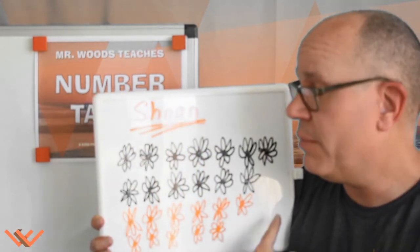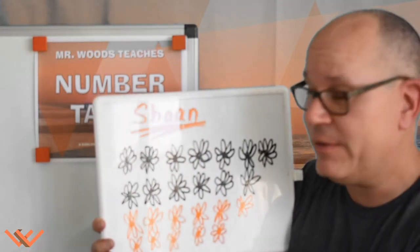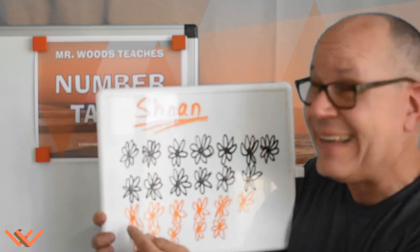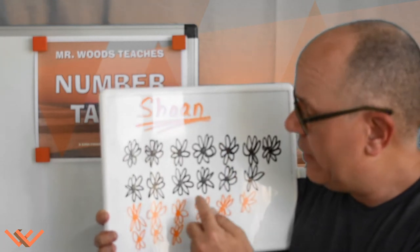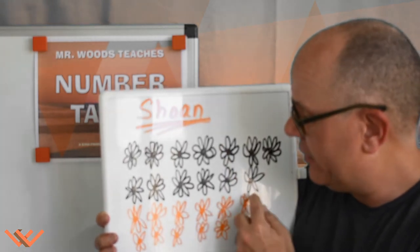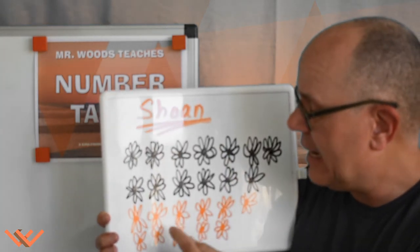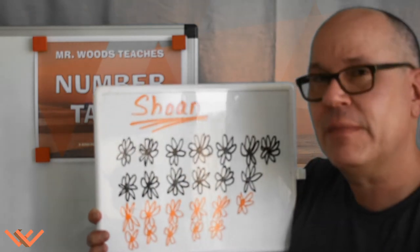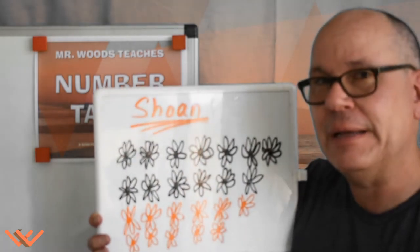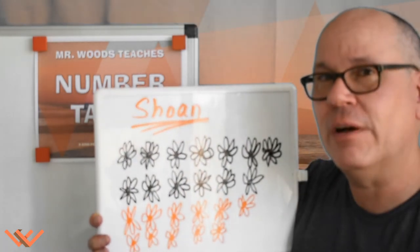The number that was left was eleven. One, two, three, four, five, six, seven, eight, nine, ten, eleven. How would you solve this?